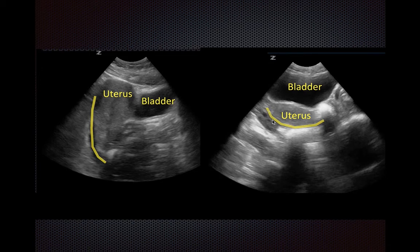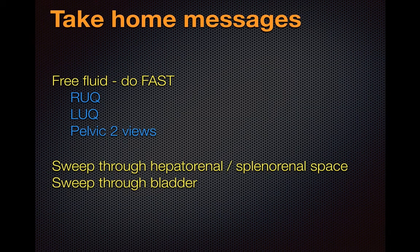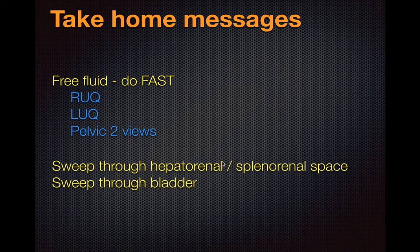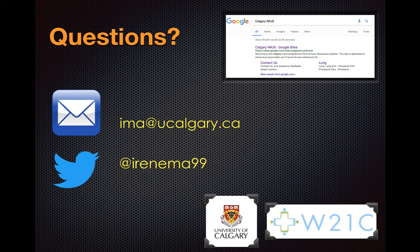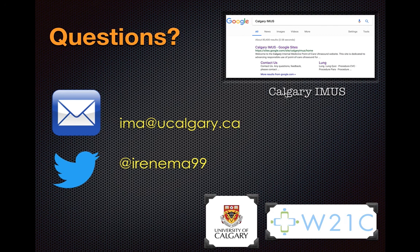The take-home messages: we've covered the technique for identifying intra-abdominal free fluid using the FAST approach — right upper quadrant, left upper quadrant, and two views in the pelvis. In the upper quadrant views, make sure you sweep through the hepatorenal and splenorenal spaces respectively. In the pelvic view, sweep through the entire bladder. Thanks for tuning in — feel free to ask questions. Our videos are uploaded on the Calgary IMUS (Internal Medicine Ultrasound) website, where you can find additional tutorials.